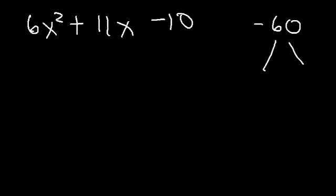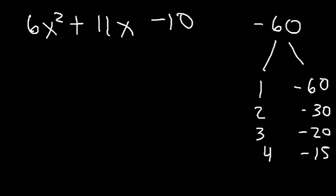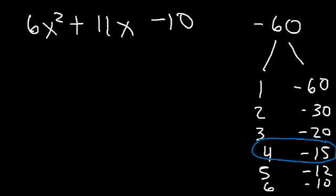So let's make a list. Negative 60 divided by 1 is negative 60. Divided by 2 it's negative 30. Divided by 3 it's negative 20. Divided by 4, negative 15. Divided by 5, that's negative 12. Divided by 6, negative 10. Notice that 4 plus negative 15 adds up to negative 11, so if we change the signs, negative 4 plus 15 adds up to positive 11, and it still multiplies to negative 60. So that works.